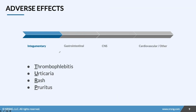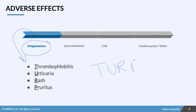Macrolide adverse effects — let's start with the integumentary group. We have thrombophlebitis, urticaria, rash, and pleuritis. These are all skin reactions in patients taking the antibiotics. A great way to remember the integumentary reactions is TURP — T-U-R-P — the beginning letter of each one of these.